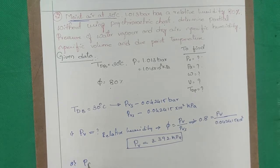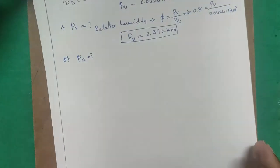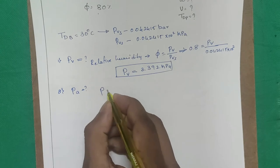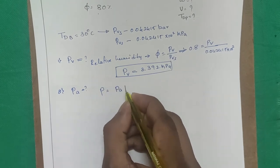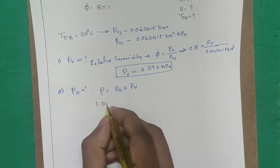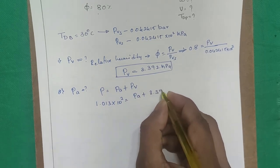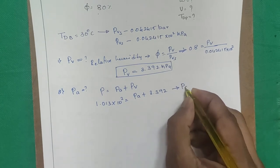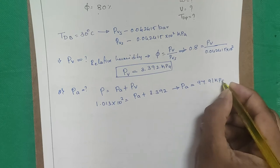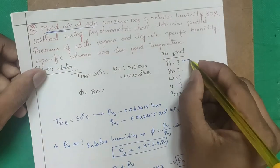Step 2 — Find PA using Dalton's law: P = PA + PV → 101.3 = PA + 3.392 → PA = 97.91 kPa.